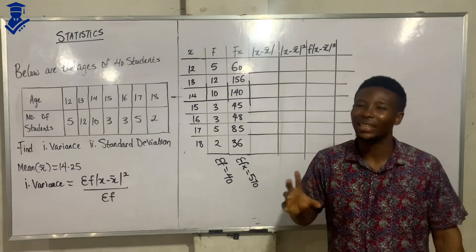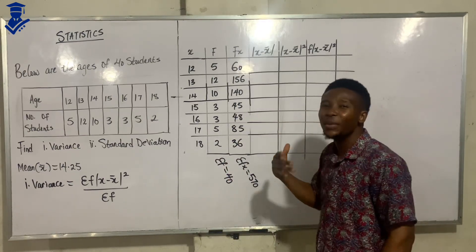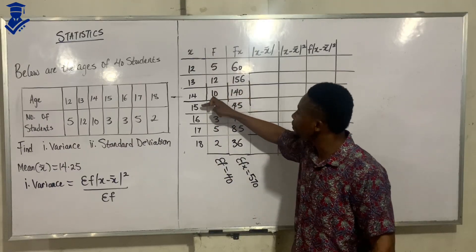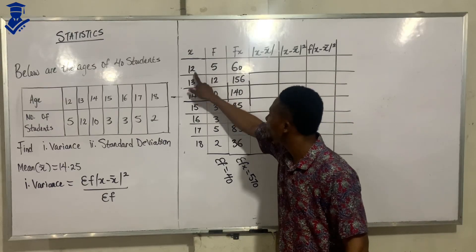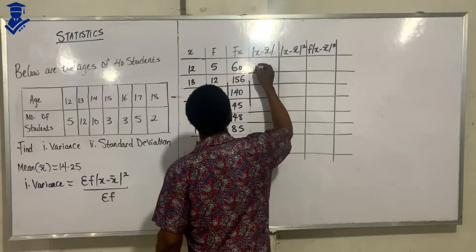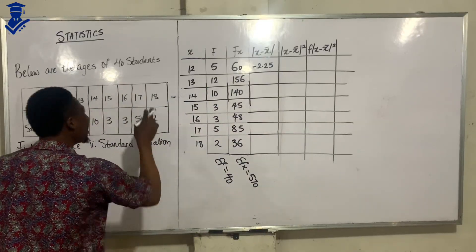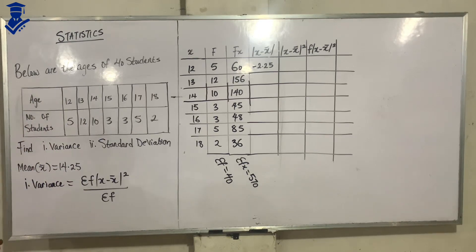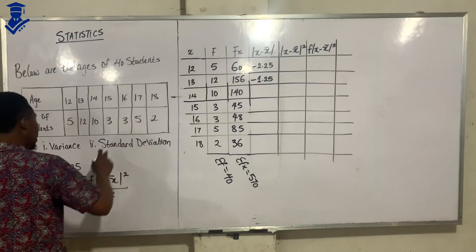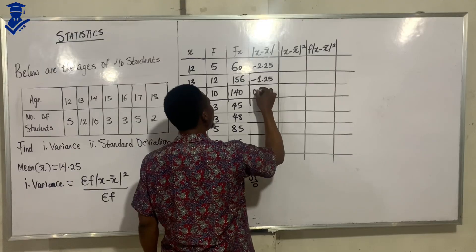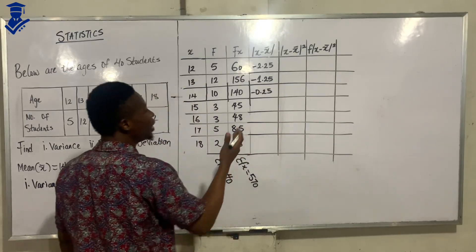Now let's proceed. We have the x minus x̄ column. X represents your items: 12, 13, 14, 15, 16, 17, 18, and x̄ is your mean. So for the first value: 12 minus 14.25 gives minus 2.25. For the next one: 13 minus 14.25 gives minus 1.25. Then 14 minus 14.25 gives minus 0.25 — the sign will not really matter as we go on.